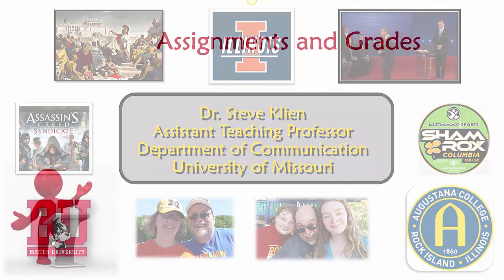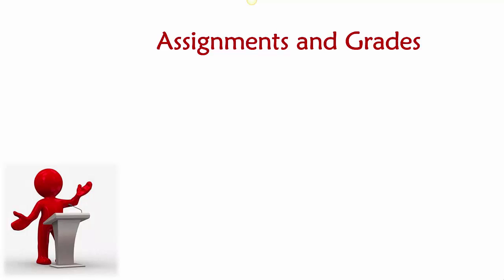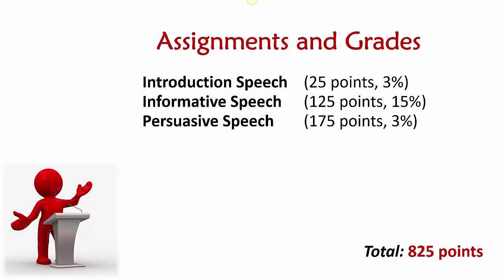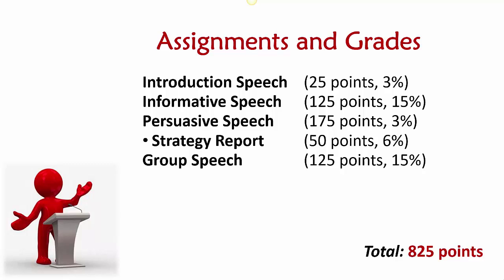So what are you actually going to be doing in this class to develop your knowledge and skills as a public speaker? There are 825 points in the class. You'll have an introduction speech early on — an informal way to get your feet wet for 25 points. Your biggest individual speaking assignments will be an informative speech and a persuasive speech, collectively worth 18% of your grade. For the persuasive speech there's also a connected written assignment, a brief strategy report. Your final speaking assignment is a group speech at the end of the semester, where you'll work with a team of four students to organize and present a panel presentation.